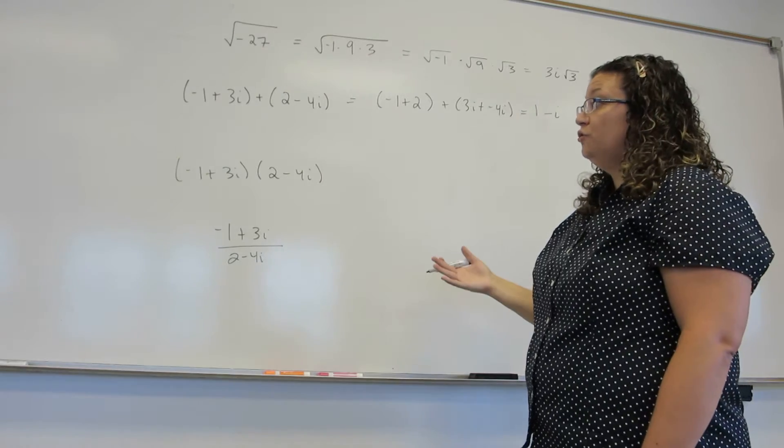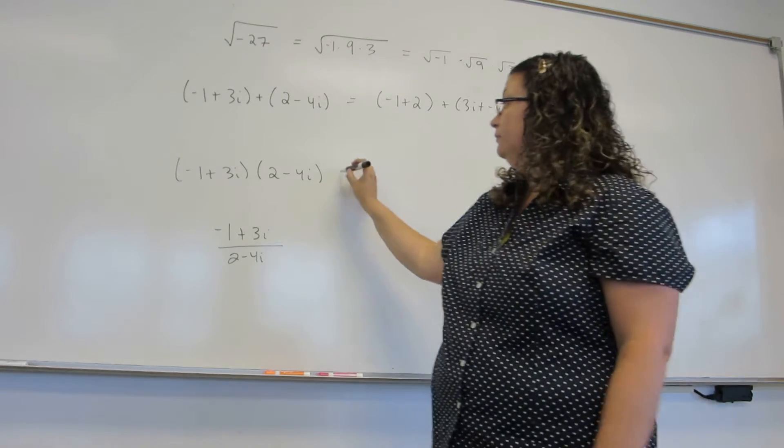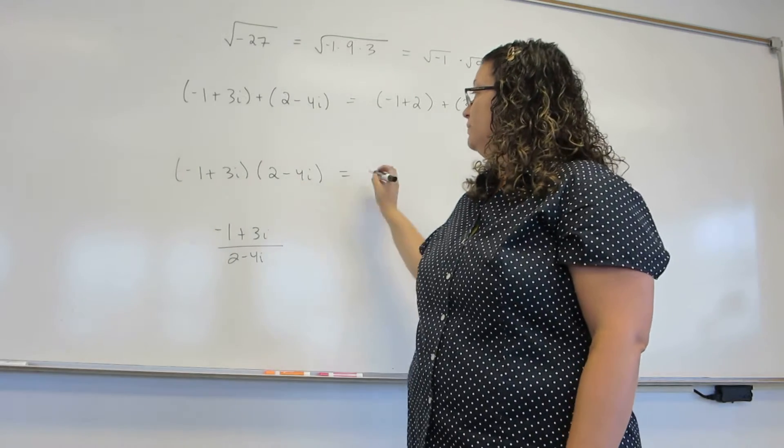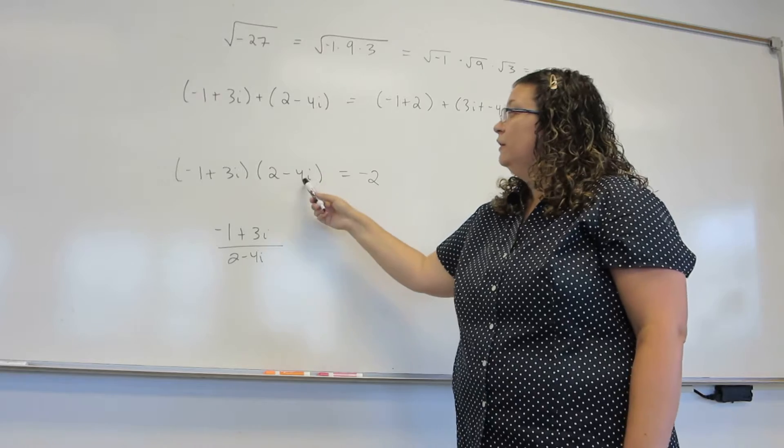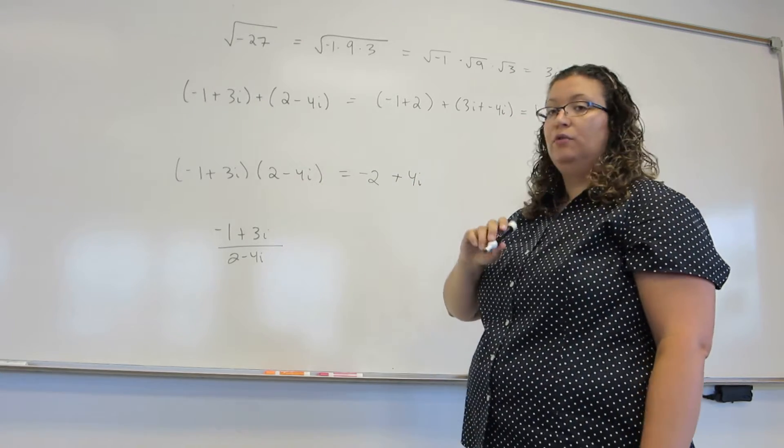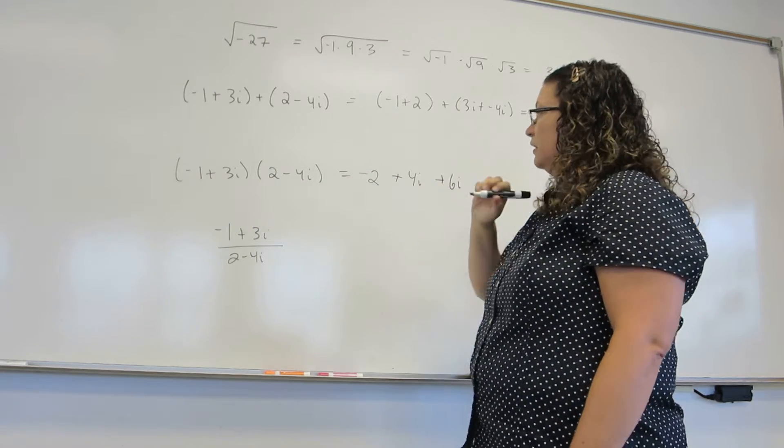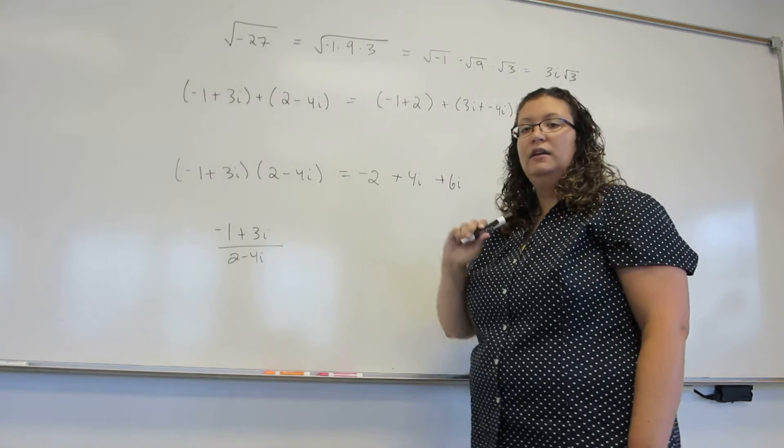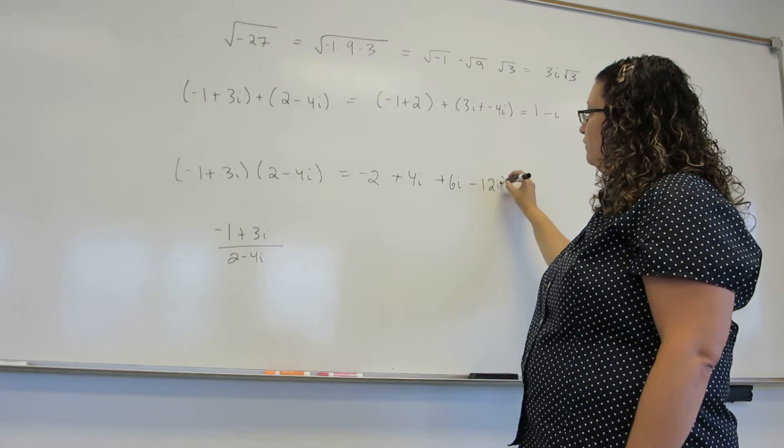Multiplication, we're again going to treat this like a variable. And so we're going to FOIL. Negative 1 times the 2 gives me negative 2. Negative 1 times the minus 4i gives me plus 4i. 3i times the 2 gives me 6i. And 3i times minus 4i gives me minus 12i squared.